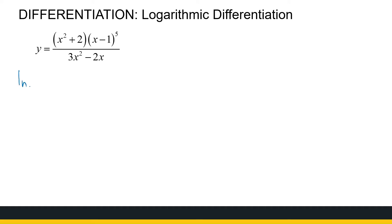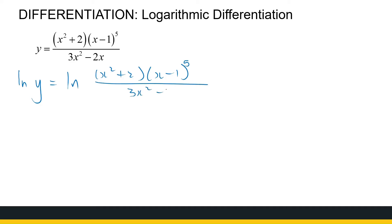What we're going to do is take ln on both sides. So ln of y is equal to ln of this big expression: x squared plus 2 times x minus 1 to the power 5, divided by 3x squared minus 2x. By taking ln on both sides we're not changing anything. Next we're going to differentiate both sides using implicit differentiation.